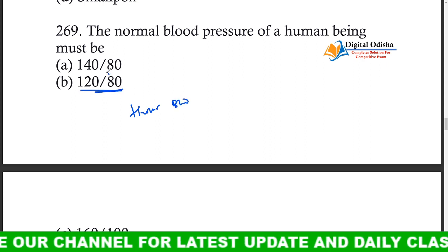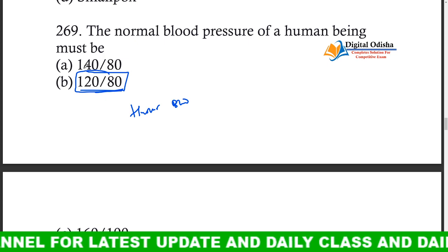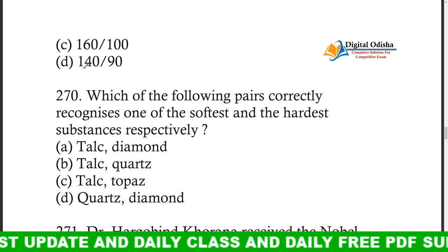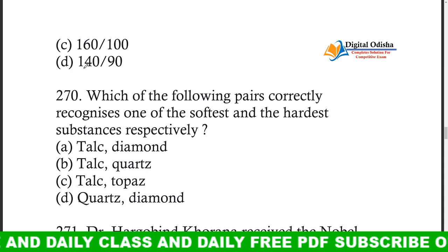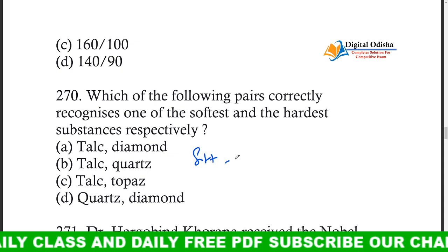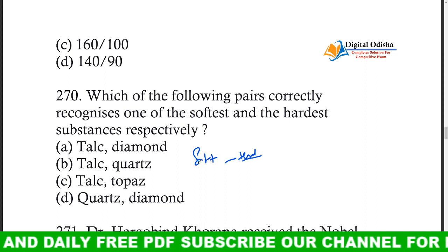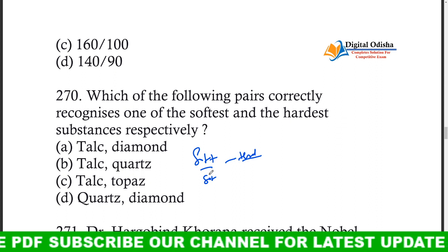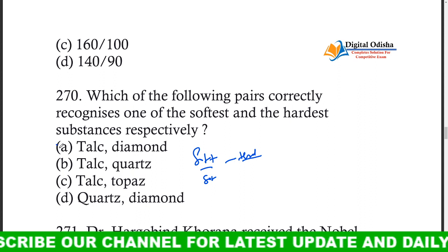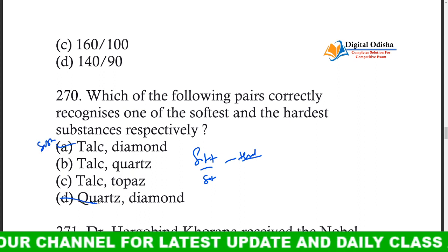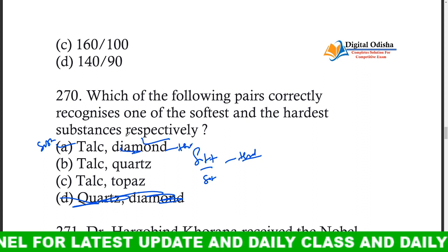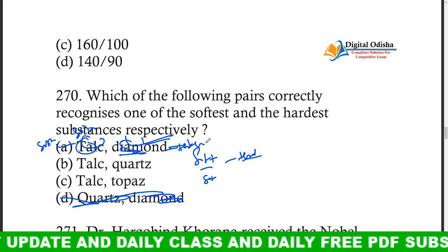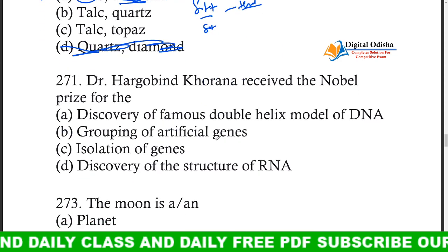Which are recognized as the softest and the hardest substances respectively? The softest substance is talc and the hardest substance is diamond.